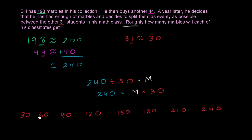So what is this? This is 30 times 1, 2, 3, 4, 5, 6, 7, 8. So we know that 240 is equal to 30 times 8. So we could write 240 is equal to 8 times 30. Or another way we could say is the number of marbles each of his friends is going to get is roughly 8. So each of his classmates is going to get roughly 8 marbles.